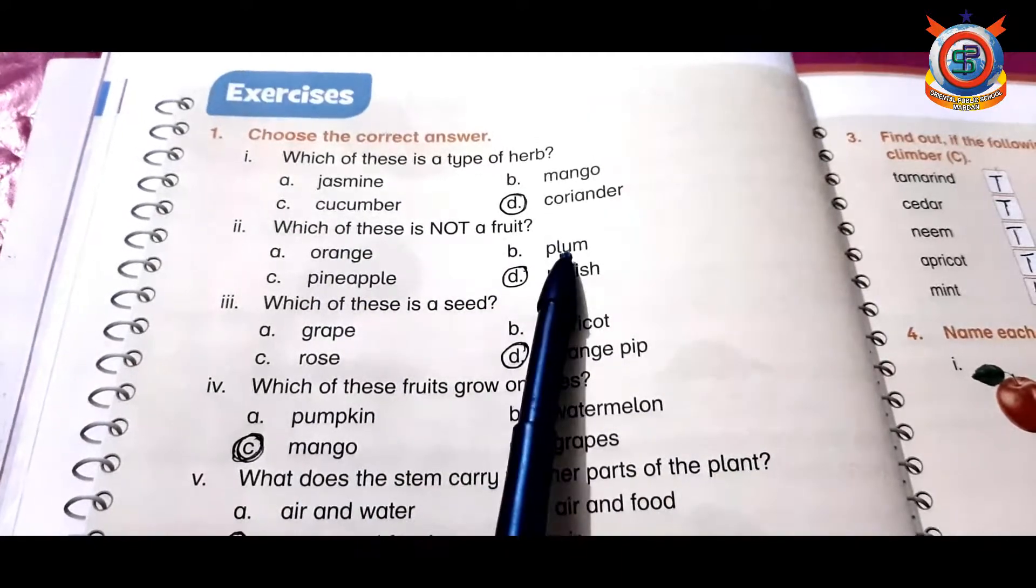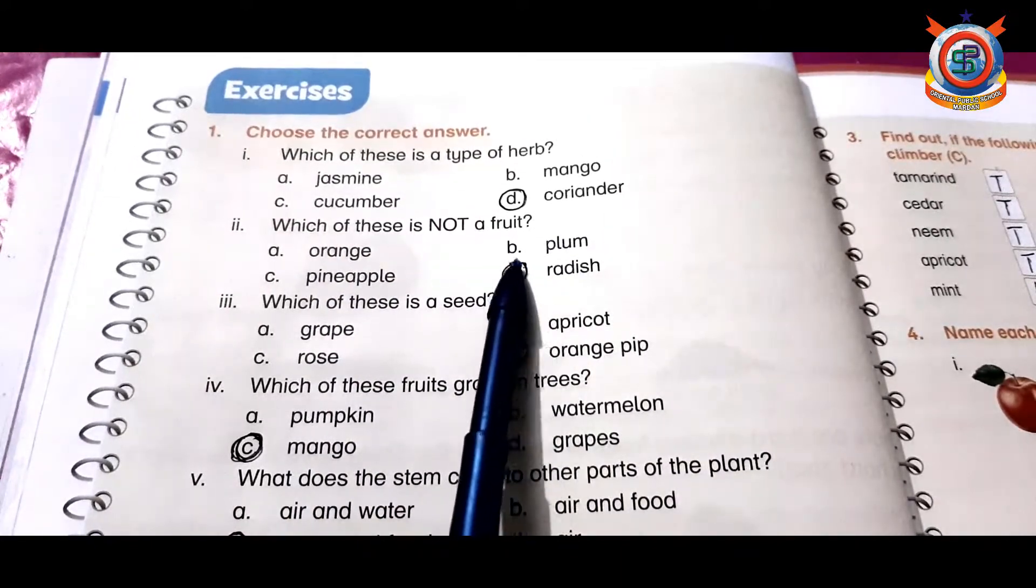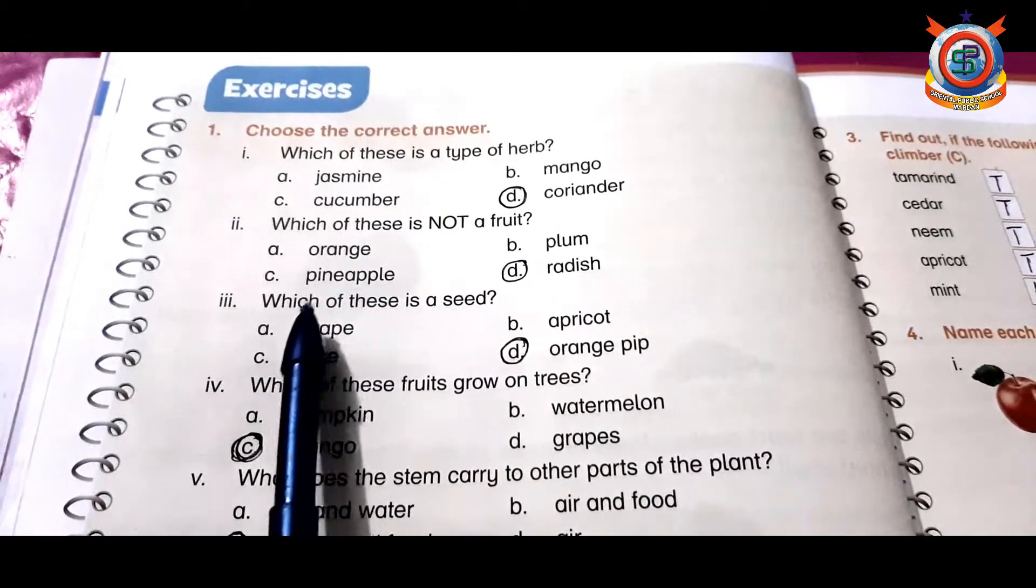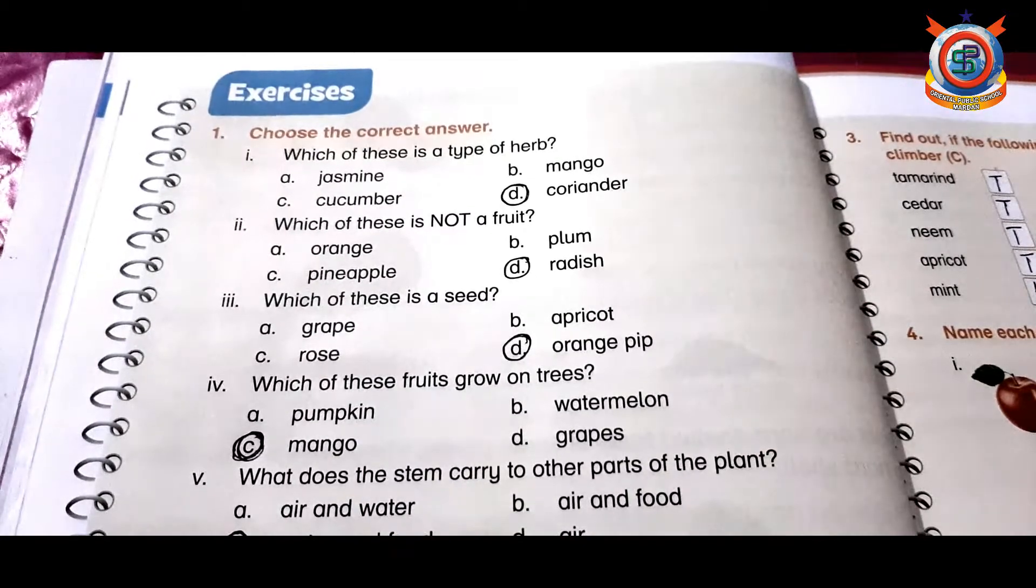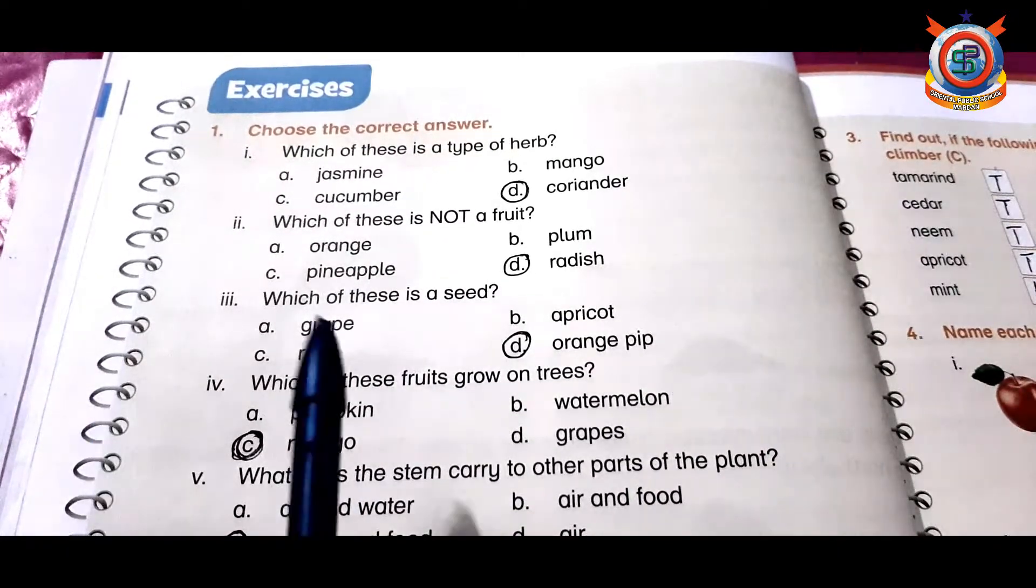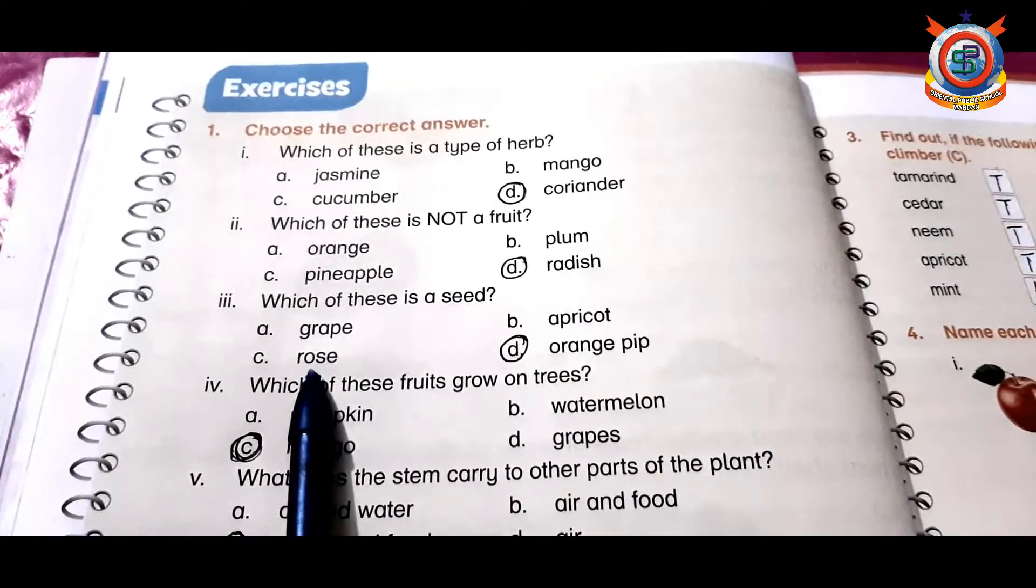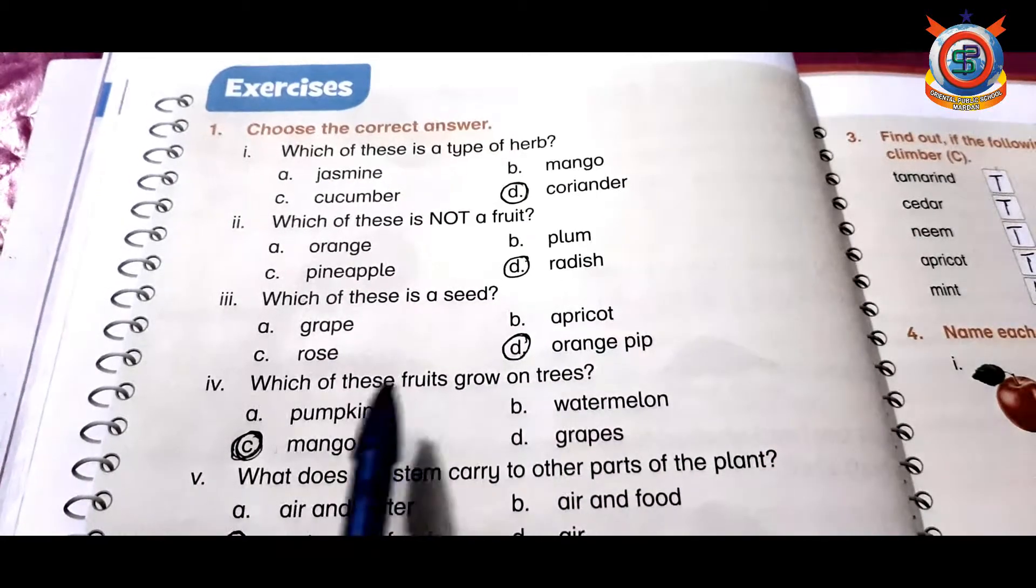Which of these is a seed? Options are grape, apricot, rose, orange pip. So the correct option is orange pip.